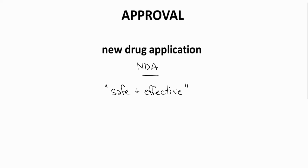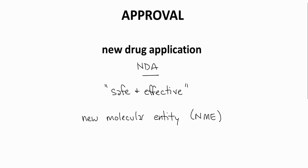The FDA can only approve a drug for use in the United States. Approval in other countries requires separate filings with other drug regulatory agencies. A new drug, like those found in an oral capsule or tablet, is called a New Molecular Entity, or NME. Sometimes these are called New Chemical Entities, or NCEs.